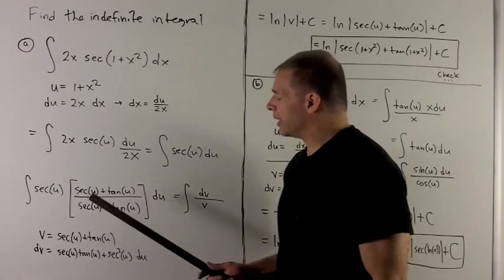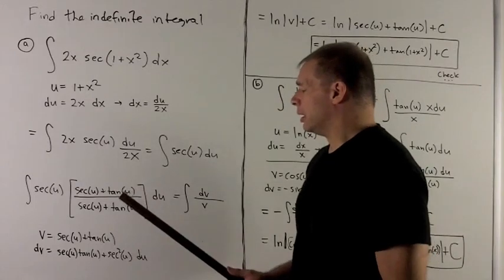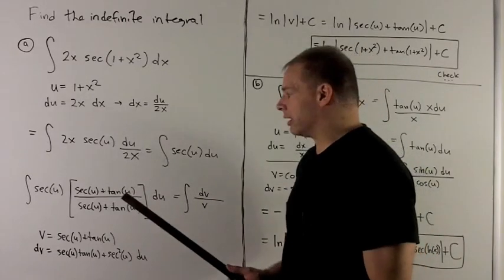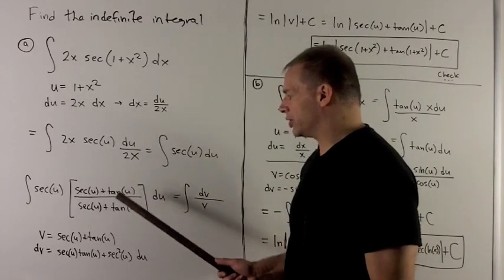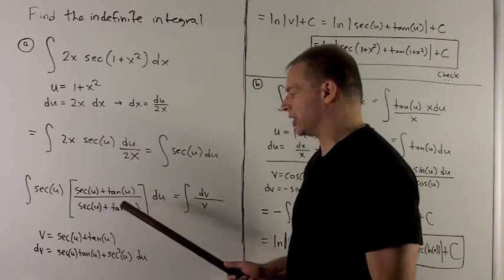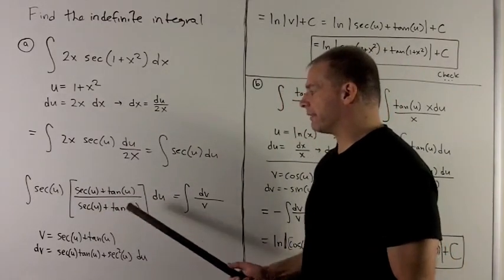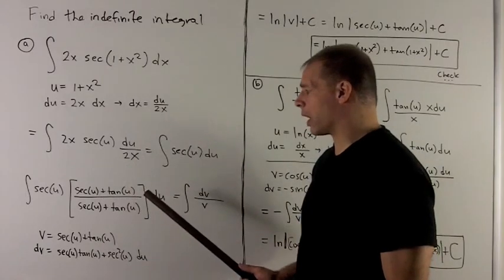So the trick is, I'm going to multiply by 1, but I'm going to multiply by 1 in the unlikely form, sec(u) + tan(u) over sec(u) + tan(u). Seems like a very lucky trick to have, but it works.